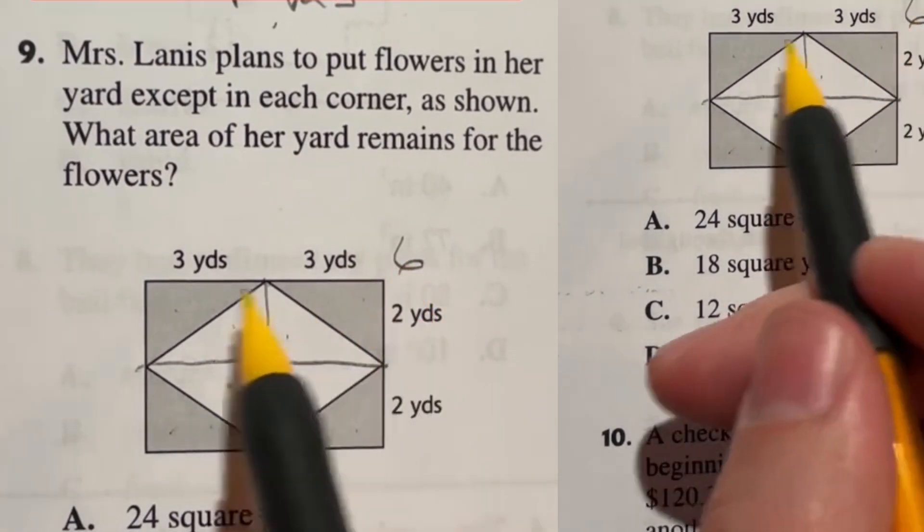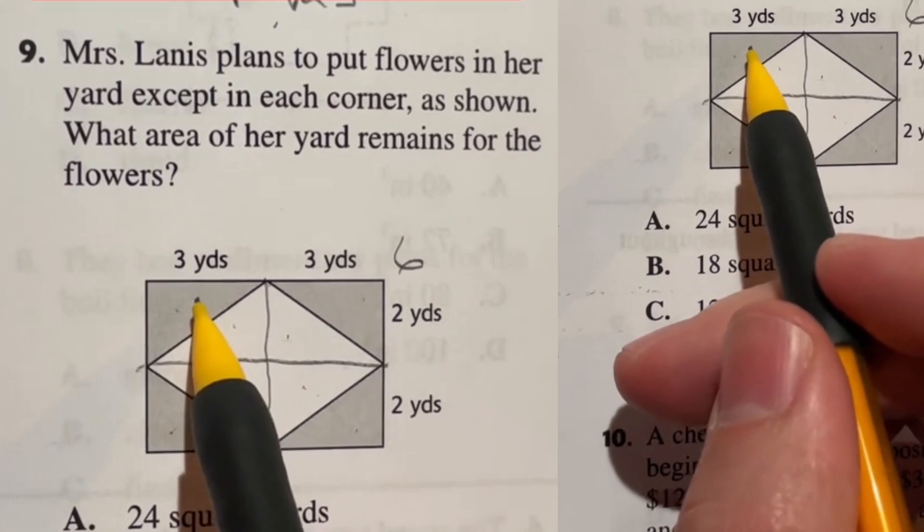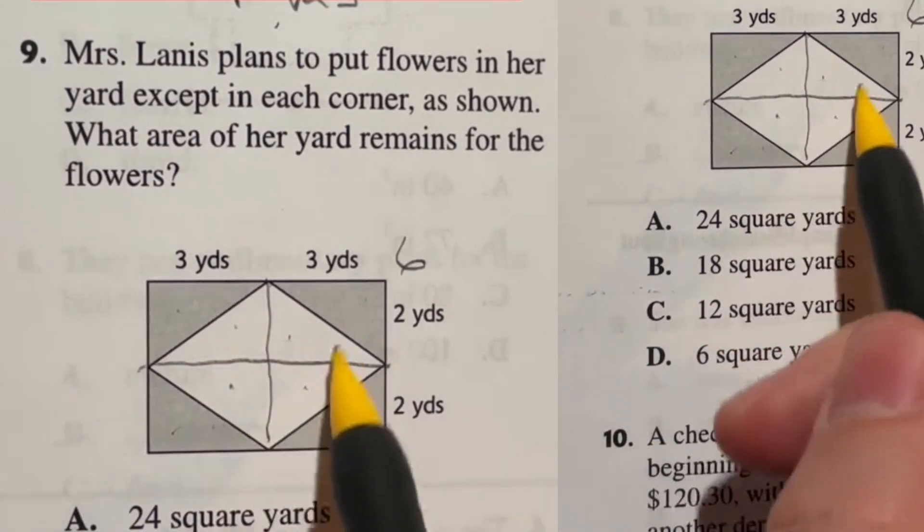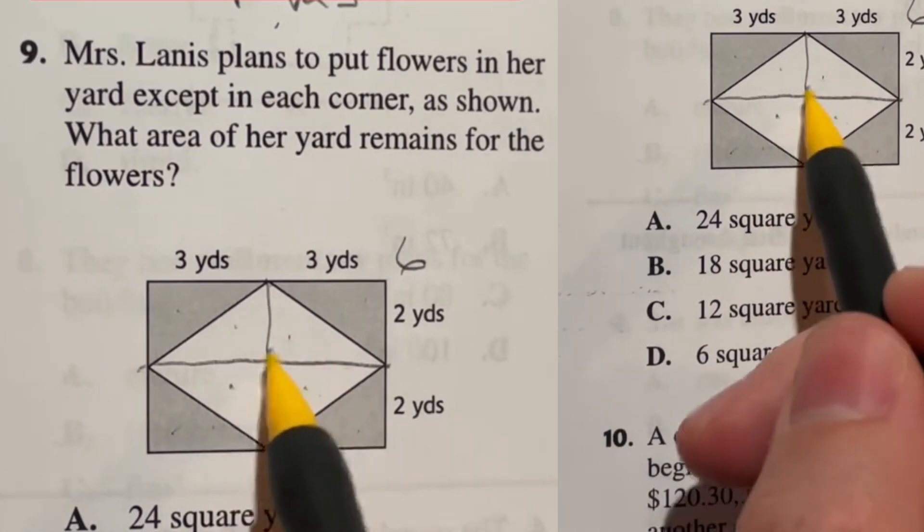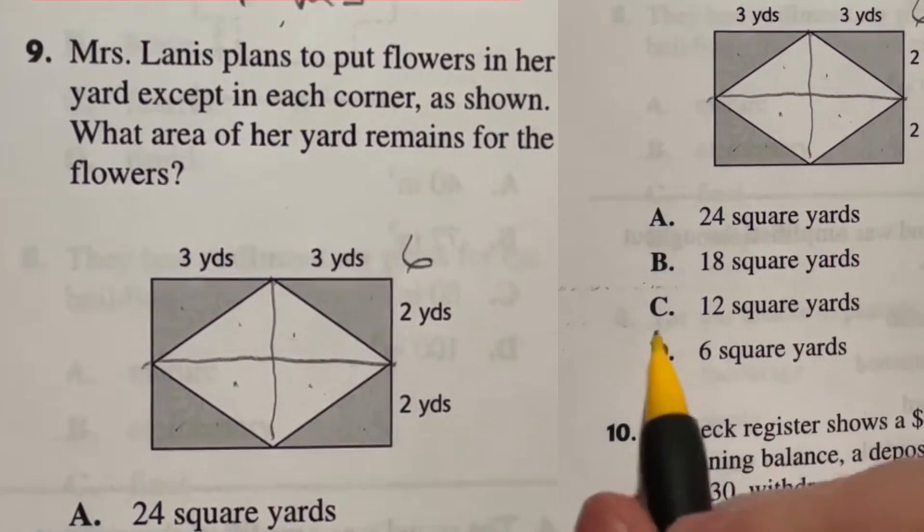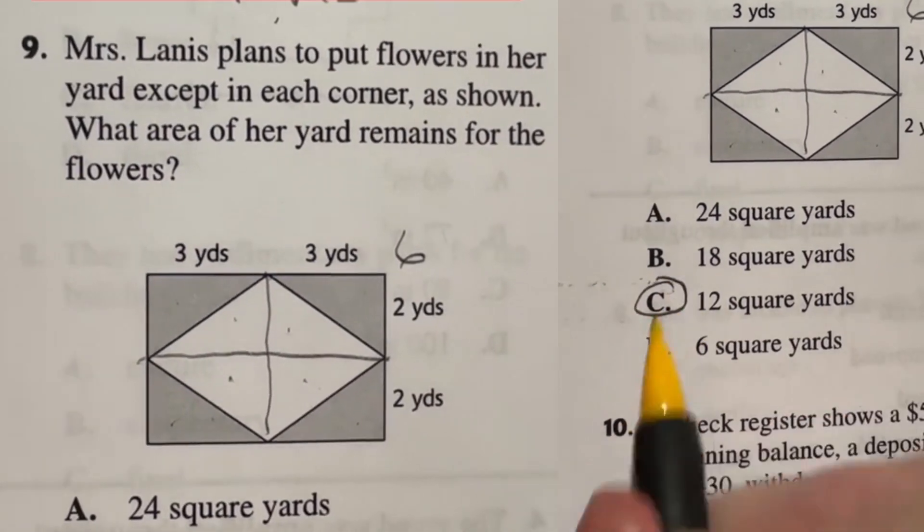So each of these rectangles are six. So we have six plus another six which is going to give us 12, another 6, 18, another 6, 24. But only half of those triangles are actually used for flowers. So in this case half of 24 is just going to give us 12. So our final answer here is actually going to be C, 12 square yards.